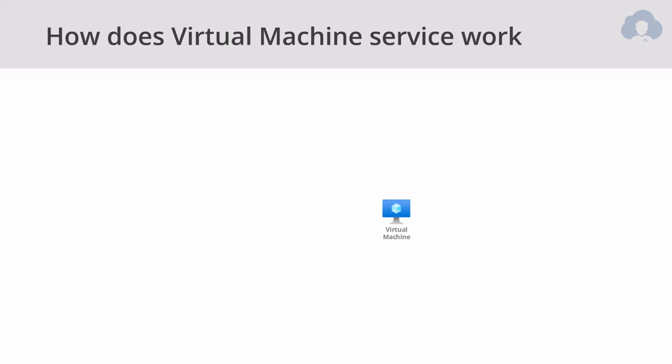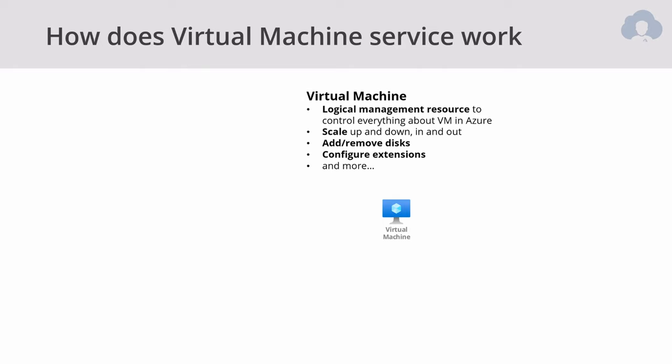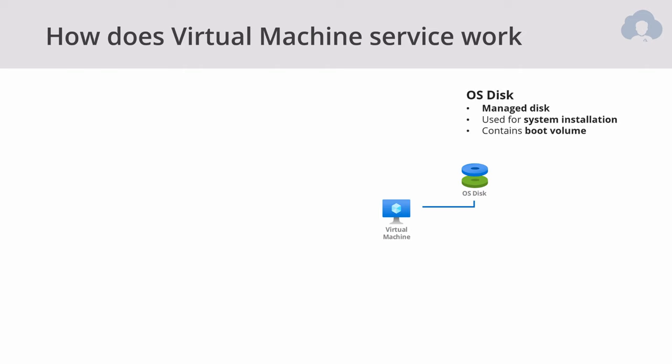So how does the virtual machine service work? There are a couple of things that will be created when you create a virtual machine, so let's talk briefly about each one. First of all, you're going to have the virtual machine itself — this is your logical management resource, a single point of management. You can scale up and down, add disks, configure extensions, and a lot of different things.